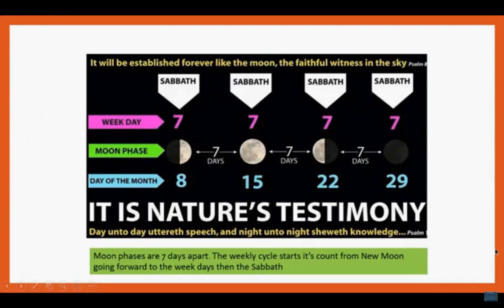Here is another example where the moon phases are seven days apart. The weekly cycle starts at the count of the new moon. The Sabbath falls on the first quarter — day eight — then the second Sabbath seven days later. In the original calendar, they were always exactly seven days apart in a 30-day calendar. The Sabbaths are always on days 8, 15, 22, and 29. This is nature's testimony: 'Day unto day utter speech, and night unto night show us knowledge,' from the book of Psalms.